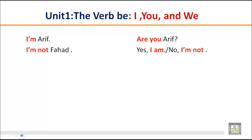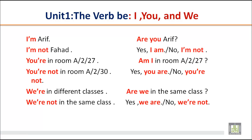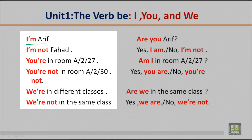Let's practice some exercises on verb be in simple present. We have three different forms. Looking at I: the statement is 'I am RF.' The negative is 'I am not Fahd.' We use 'are' with you. So: 'You are in room A to 27.' The negative: 'You are not in room A to 30.'